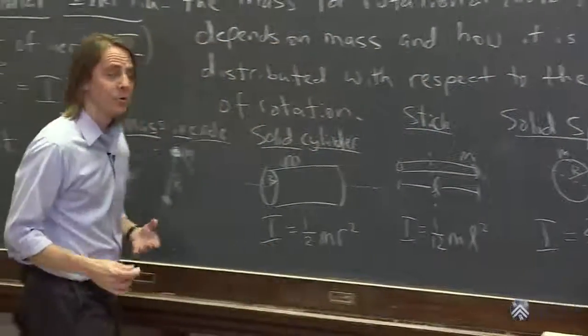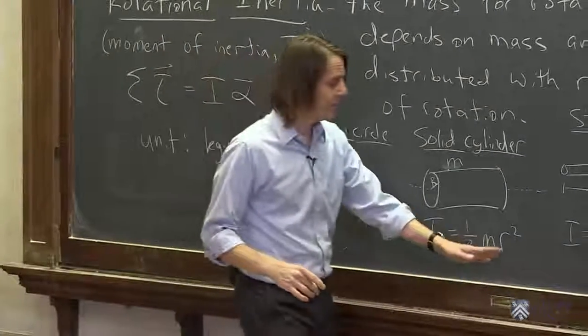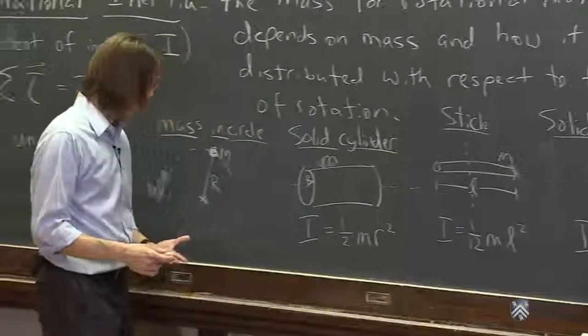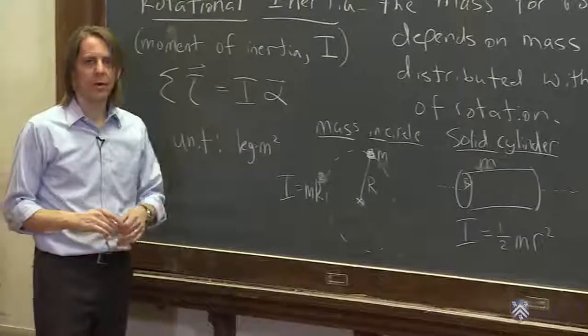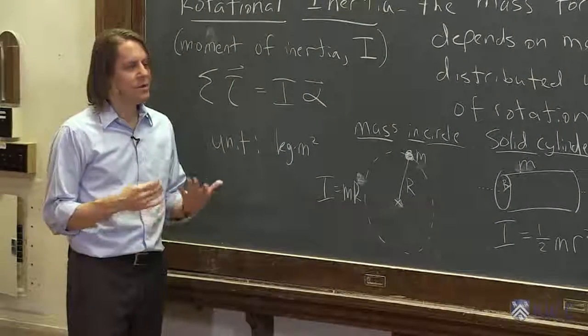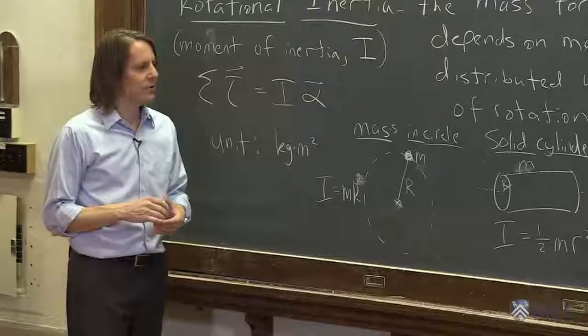So you can see, in terms of units, they're all a mass times the distance squared. Because they all have to be in kilogram meters squared. But the details depend on the geometry and depends on the axis of rotation.